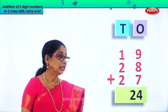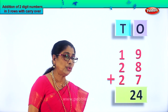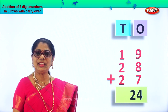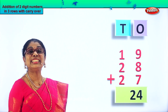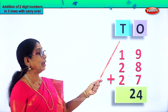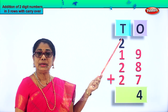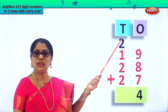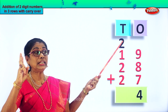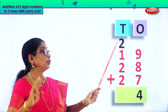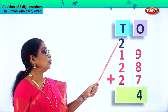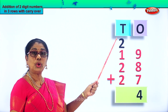Twenty plus four is twenty-four. We leave the four here. Take twenty ones — that is two tens — carry over and put it in the tens place. Twenty ones become two tens. So the two comes over here. Let's add two plus one plus two plus two.